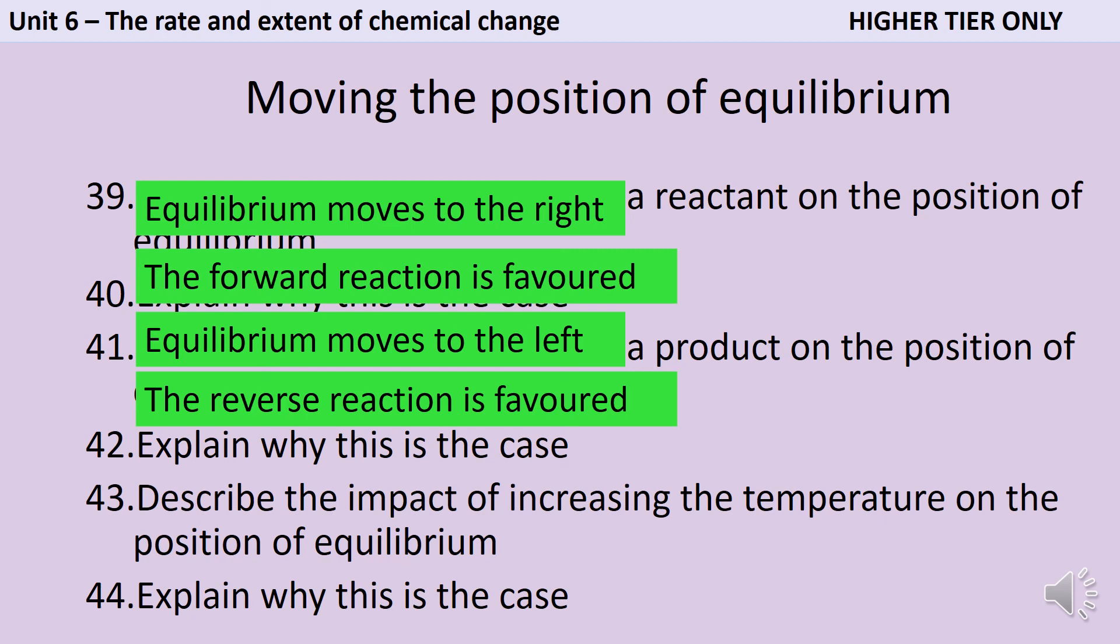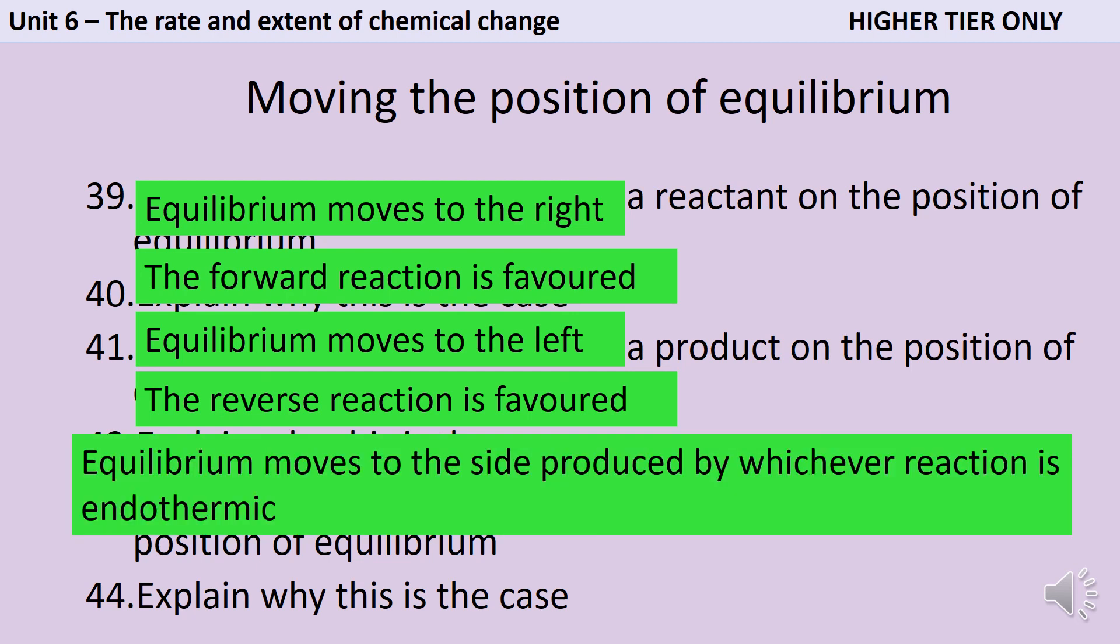If we increase the temperature, we need to know which reaction is exothermic and which is endothermic. Le Chatelier's principle tells us that whatever we try to do to a system that's at equilibrium, the system will try to resist it, to counteract that change. If we heat a reaction up, it will try to cool itself down, and the way that happens is the endothermic reaction will be favored. The equilibrium will move to the side produced by whichever reaction is endothermic.